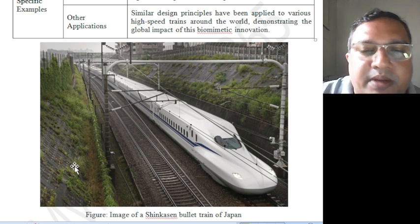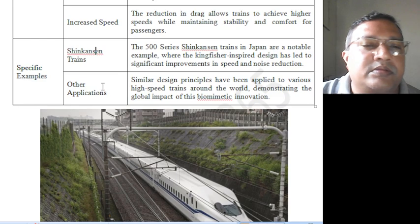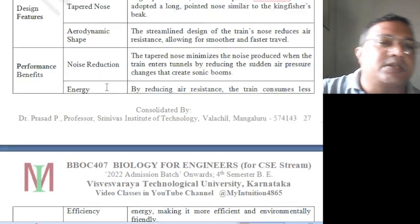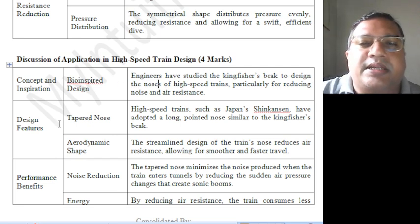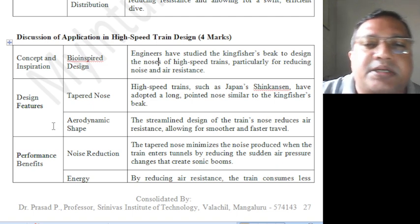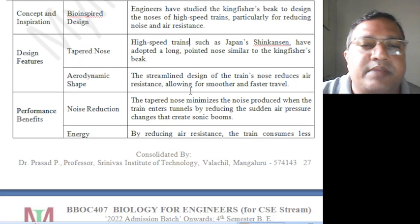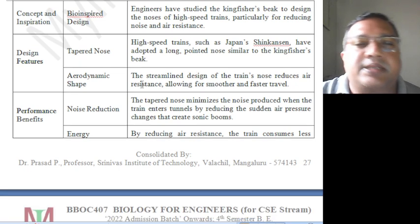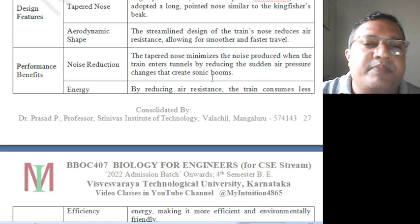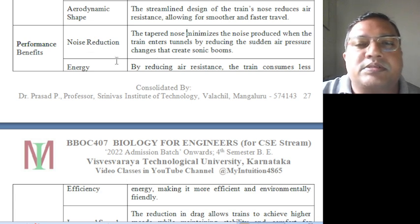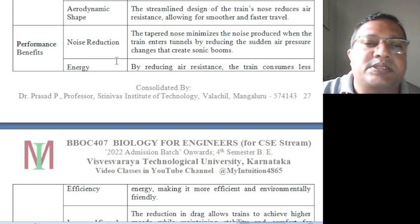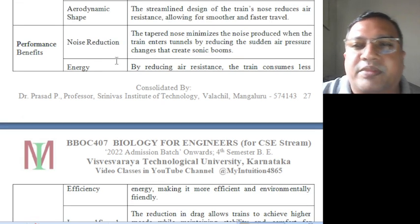This is the bullet train of Japan. Engineers have studied the kingfisher's beak to design the nose of high-speed trains, particularly for reducing noise and resistance. High-speed trains such as Japan's Shinkansen have adopted a long, pointed nose similar to the kingfisher's beak. The streamlined design of the train nose reduces air resistance, allowing for smoother and faster travel. The tapered nose minimizes the noise produced when the train enters tunnels by reducing sudden air pressure changes.